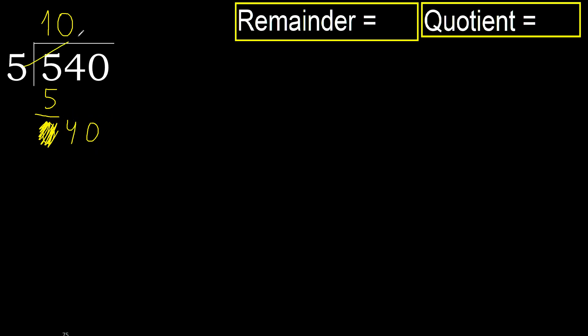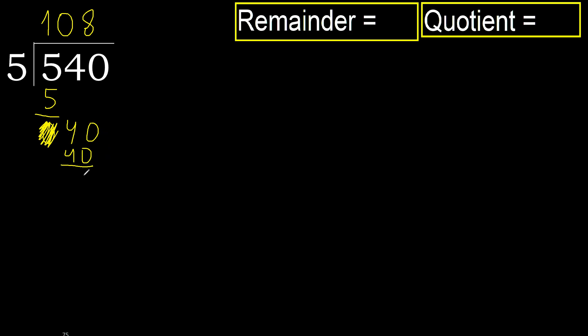40. 5 multiplied by 8 is 40, which is not greater. 40 minus 40 is 0. Next.